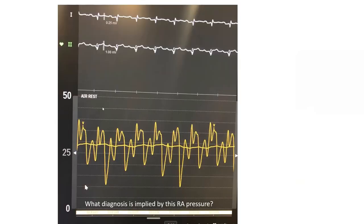This is another case — an RA pressure recording. What is the diagnosis implied by this RA pressure? This is very common and pathognomonic for one issue. This is pathognomonic for severe tricuspid regurgitation. The RA pressure is peaking in a plateaued manner in systole, looking rectangular in systole. This is what we call a ventricularized RA pressure.